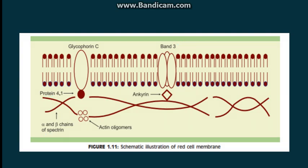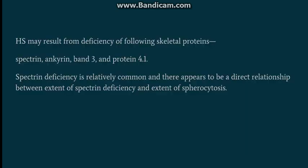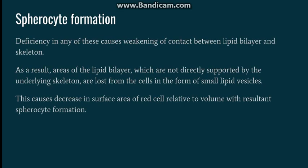Hereditary spherocytosis can be due to deficiency of any of these proteins — it can be due to deficiency of spectrin, ankyrin, band 3, or protein 4.1. However, the most common deficiency is spectrin deficiency.